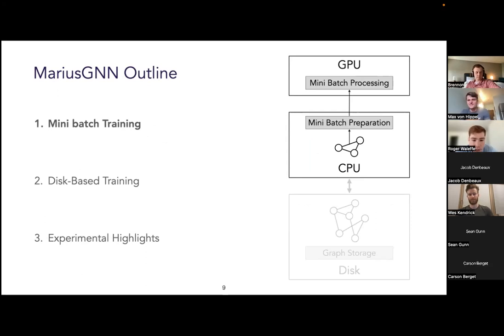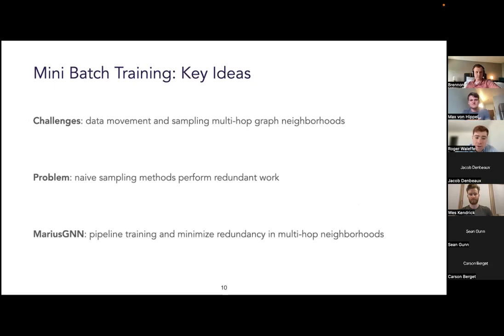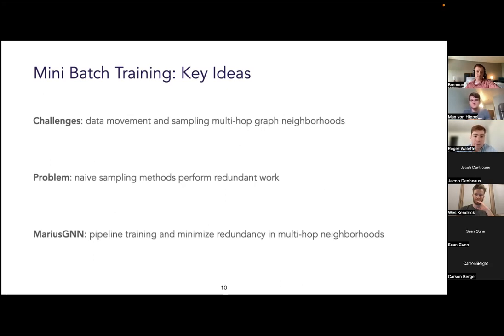For the remainder of the talk, I'll focus on those two key ideas in more detail. First, I'll cover how we optimize mini-batch preparation and processing to maximize GPU utilization. We'll see two key challenges: a data movement challenge, and the fact that multi-layer GNNs require sampling multi-hop neighborhoods. Existing sampling methods perform a lot of redundant work, leading to lower GPU utilization. Then I'll introduce Marius GNN's techniques: pipelining to hide data movement and minimizing sampling redundancy.